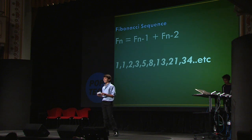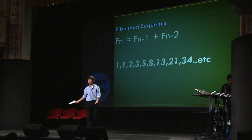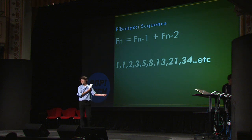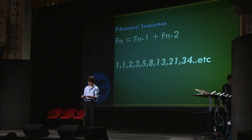The number sequence looks like this: 1, 1, 2, 3, 5, 8, 13, 21, 34, and so on. Today, it's called the Fibonacci sequence.